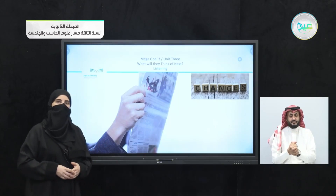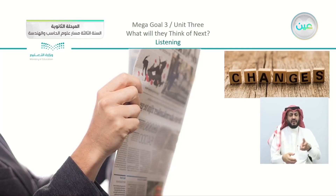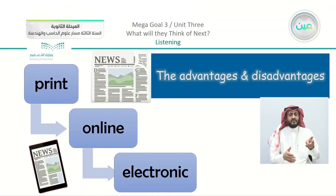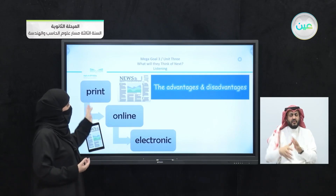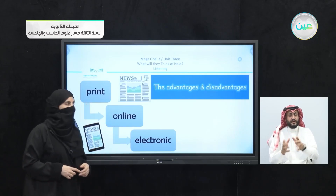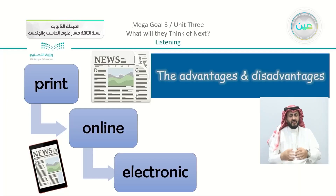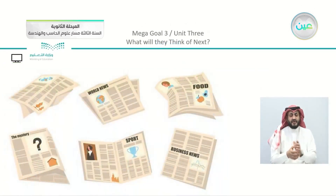Now the other part we took in our last lesson was about changes — specifically concerning newspapers, which was the listening lesson. We talked about, or rather listened to, the advantages and disadvantages of the three types we discussed: print, online, and electronic. We listened to information about newspapers and completed our table.